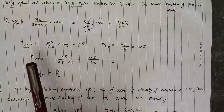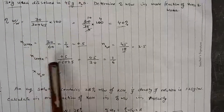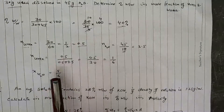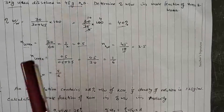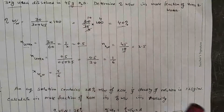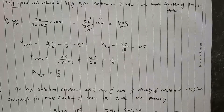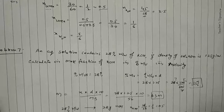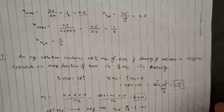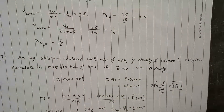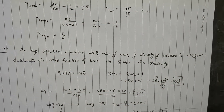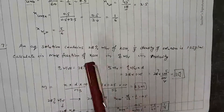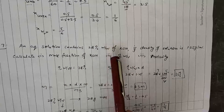So the mole fraction of urea comes out to approximately 0.167, and the mole fraction of water follows because the sum of mole fractions is always equal to 1. Moving on to Problem 7: we have an aqueous solution containing 28 percent weight by weight of KOH.